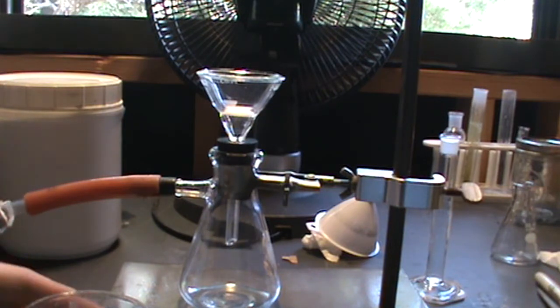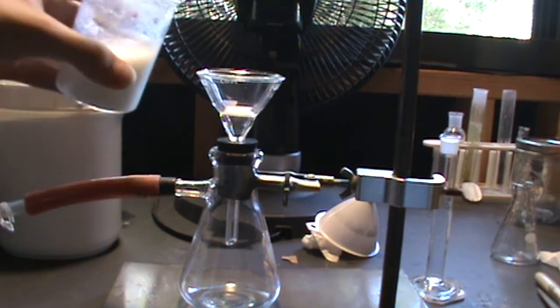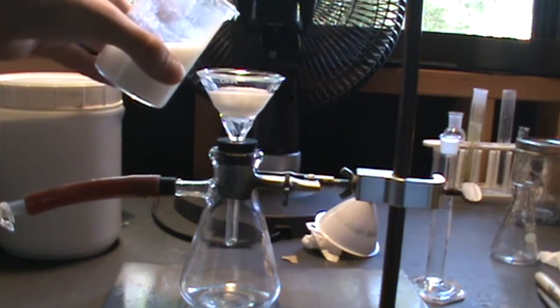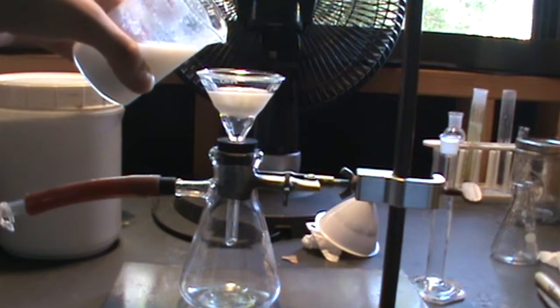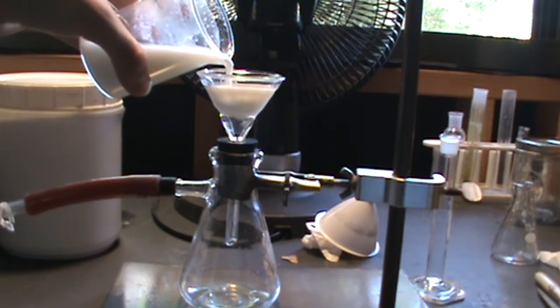Next I attempt to do a vacuum filtration to separate the precipitate. Unfortunately, the precipitate is so fine that it clogs up the fritted funnel. Because of this, I opt for a different option.